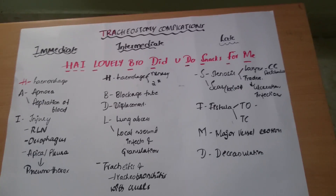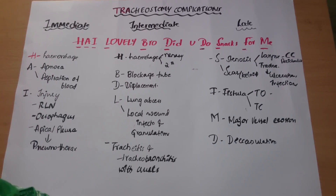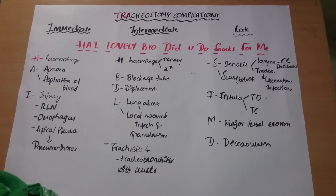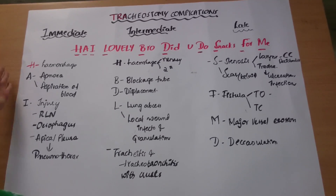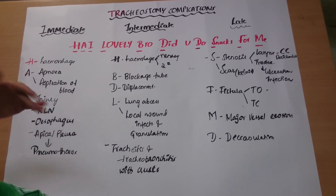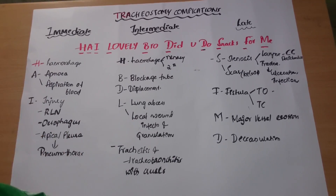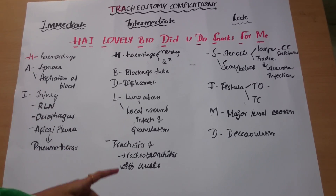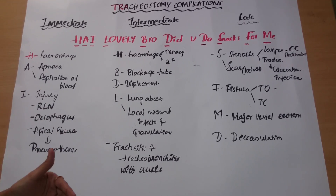Now I am going to discuss about tracheostomy complications. Tracheostomy complications are classified into immediate, intermediate, and late. Immediate complications are during the surgery. The mnemonic is 'Hi lovely bro, did you do snacks for me?'